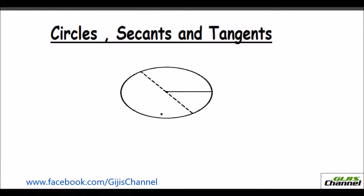You have a circle with center O. For a circle, you have a center and from the center to any point on the circle, if you draw a line, that is called the radius. So OP is the radius of this circle, and however many radii you draw on a circle, they all measure the same. From the center to any point on the circle, if you draw a line, that is the radius and they all measure the same.